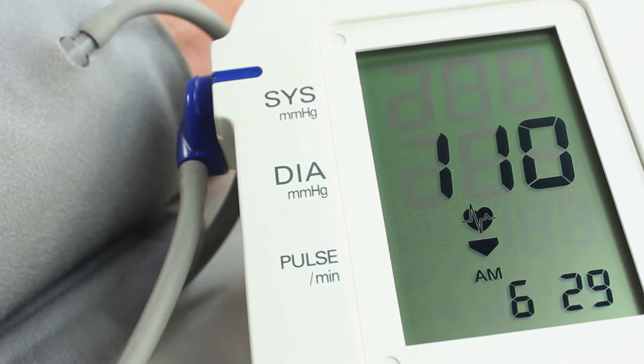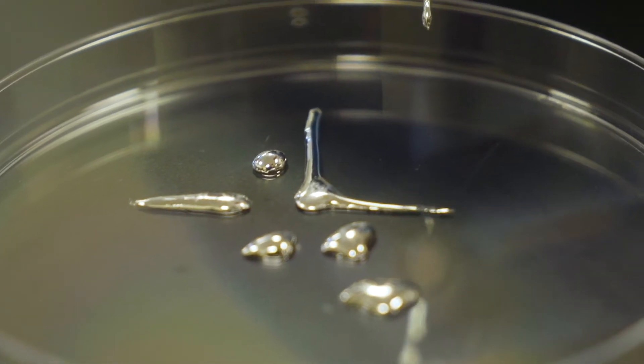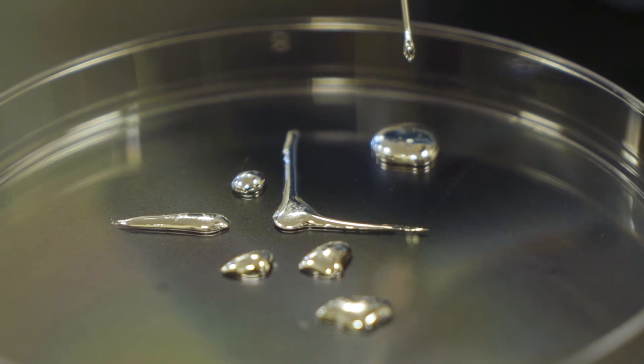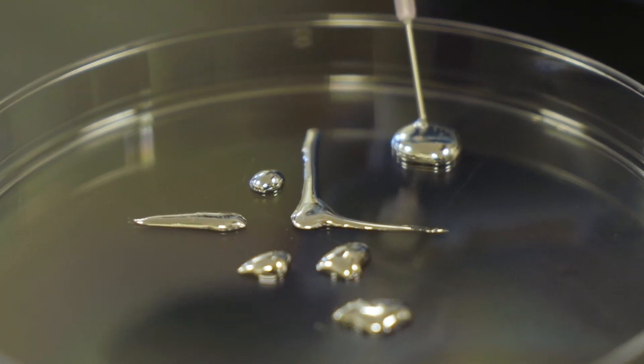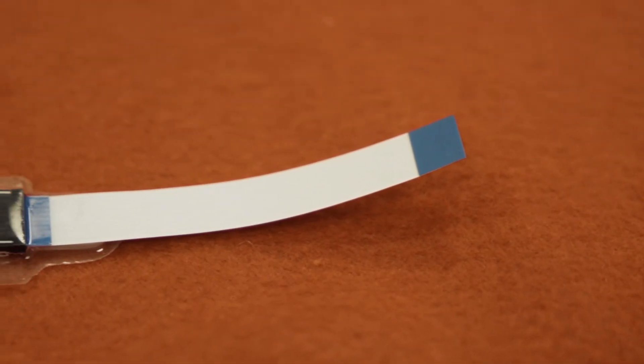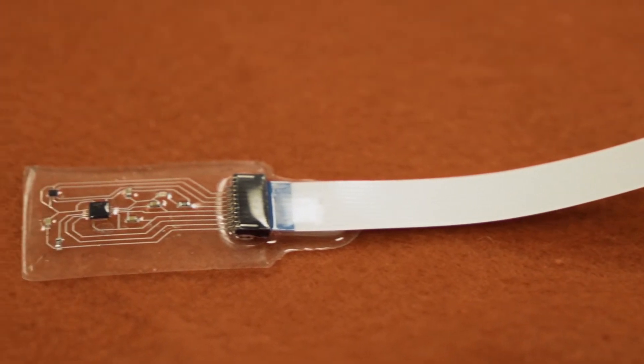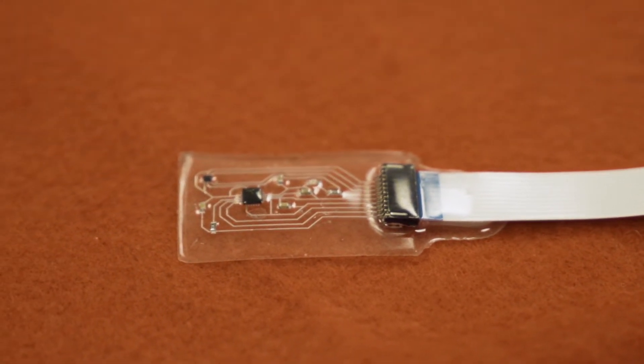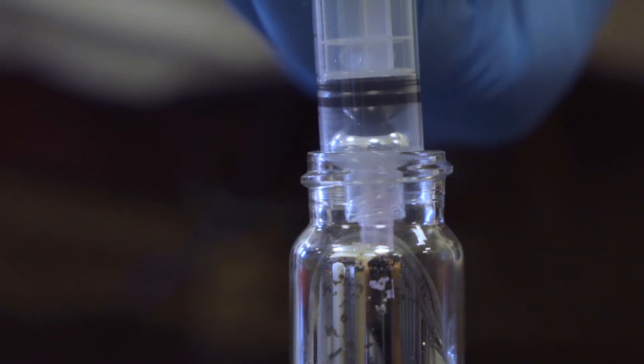A nice feature of these liquid metals is that they have all the advantages of being liquid at room temperature, so they're highly deformable. You can seal them up in a rubber and they can deform with the surrounding material, but they're also metal and so they have very high electrical conductivity, also high thermal conductivity, and in some cases we can use the thermal response of these materials to change their stiffness.